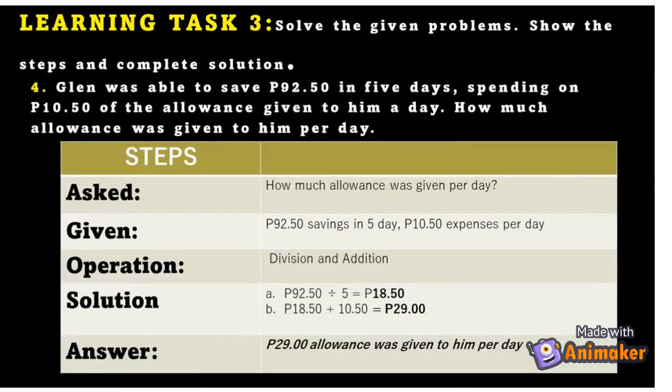Number 4: Glenn was able to save 92.50 pesos in five days, spending 10.50 pesos of the allowance given to him each day. How much allowance was given to him per day?